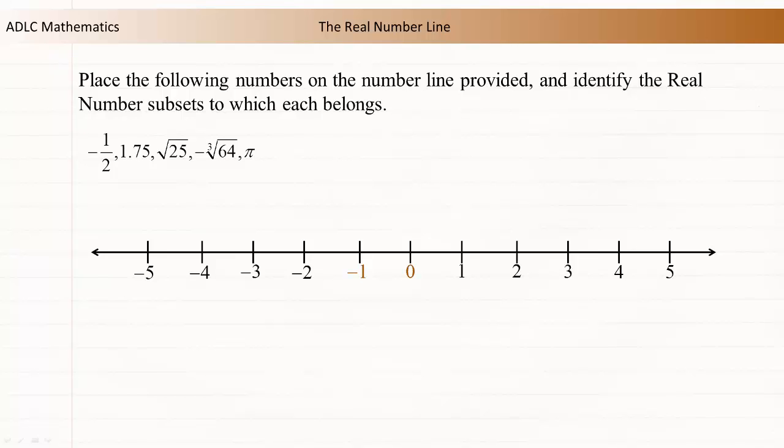To place negative 1 half, determine the integers that it sits between. Negative 1 half sits between negative 1 and 0.